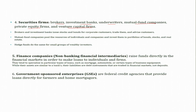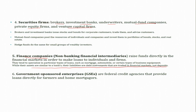Another group of financial intermediaries is finance companies, also called non-banking financial intermediaries. They raise funds directly in the financial markets to make loans to individuals and firms, and tend to specialize in particular types of loans such as mortgages, automobile, and certain types of business equipment. While their assets are similar to banks, their liabilities are debt instruments traded in financial markets, not deposits. Importantly, these financial companies do not come under the direct purview of the central banking system, and deposits are not their prime source of raising capital.